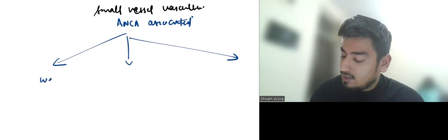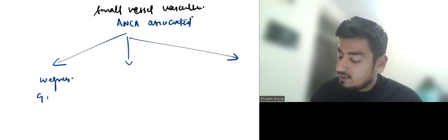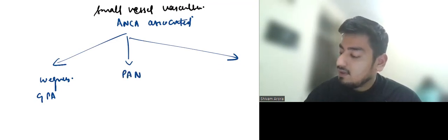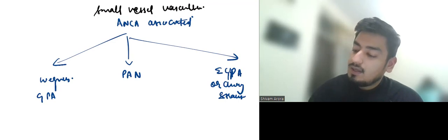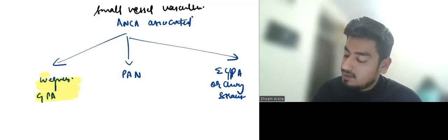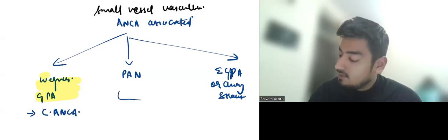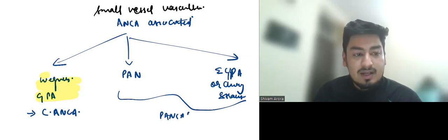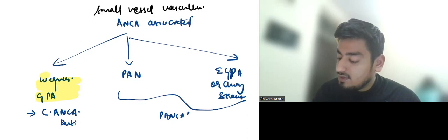Then we have small vessel vasculitis. Small vessel we will only discuss about ANCA associated. In ANCA associated we have Wegener's or granulomatosis with polyangiitis, we have MPA, then we have EGPA or Churg-Strauss. Wegener's or GPA is associated with C-ANCA while both of these are associated with P-ANCA. C-ANCA or cytoplasmic ANCA is also known as anti-proteinase 3, while P-ANCA is also known as anti-MPO.